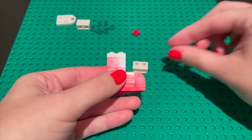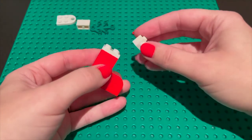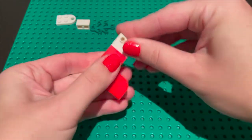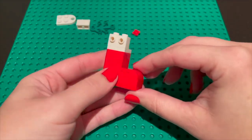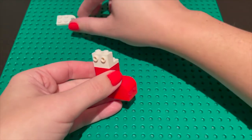Next you're going to take a one by two white SNOT brick to put on one side so that the studs stick out the side. Remember, SNOT stands for studs not on top.